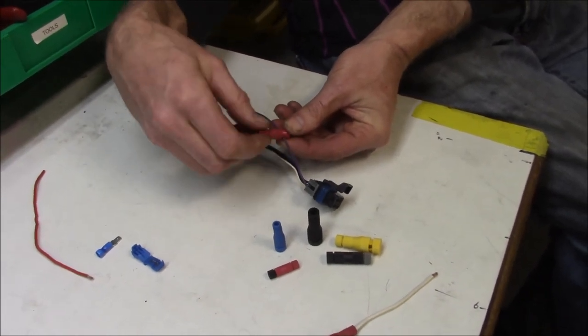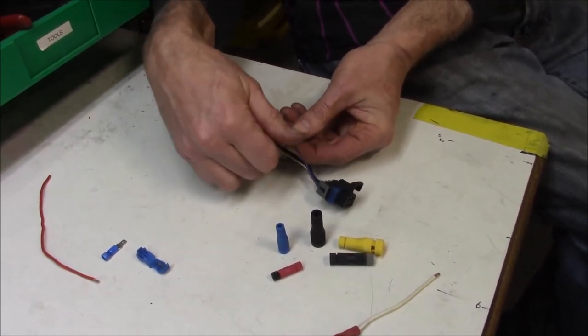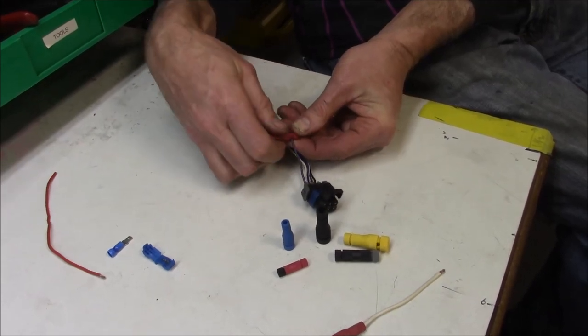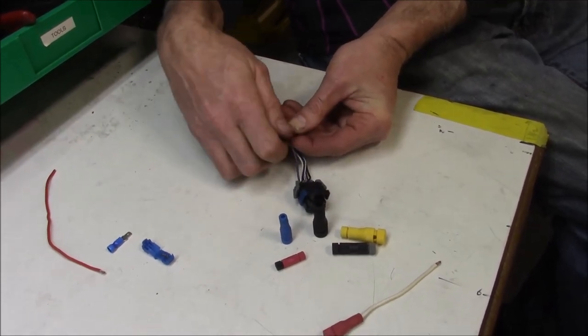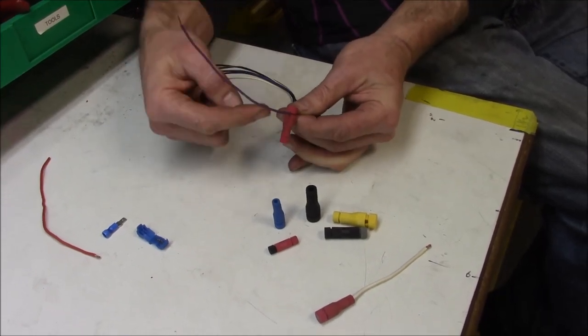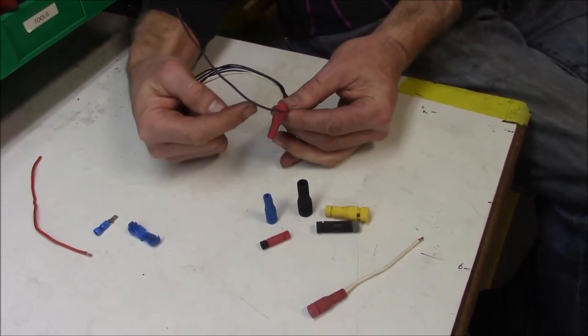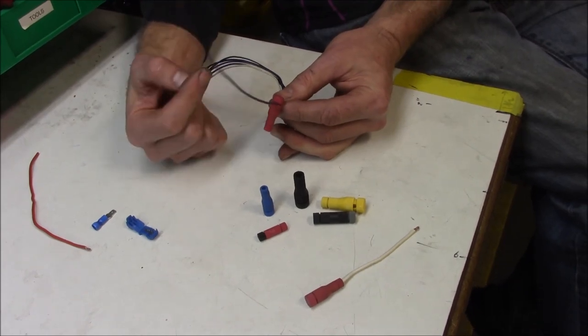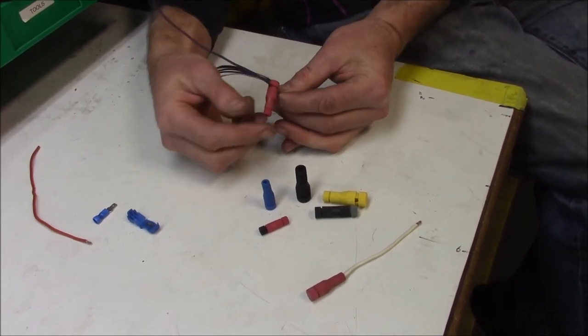And screw this on. Now you can see how that wire's in there and that little needle I showed you has pierced the wire. So all there is, I'll show you, is a tiny little hole in that wire now. So that's in there nice and strong.